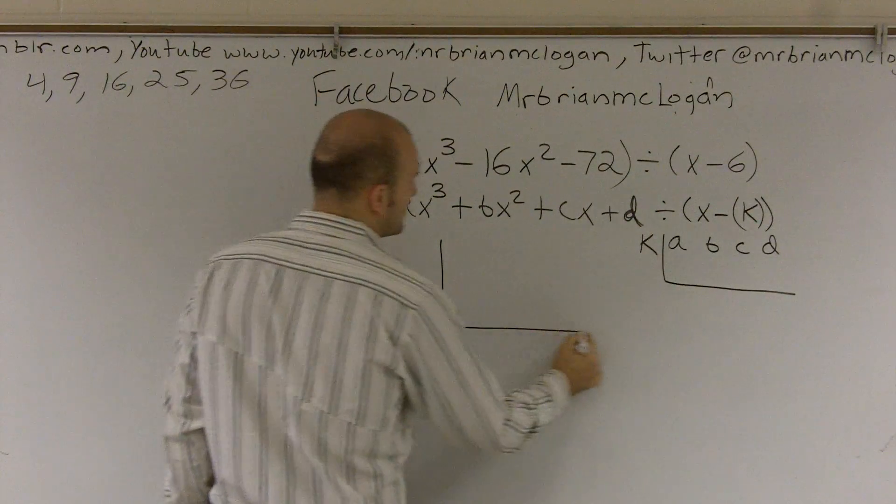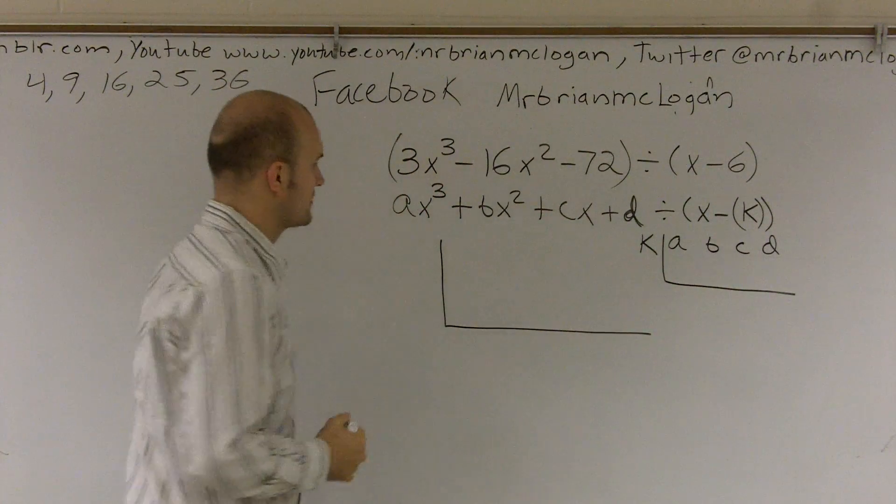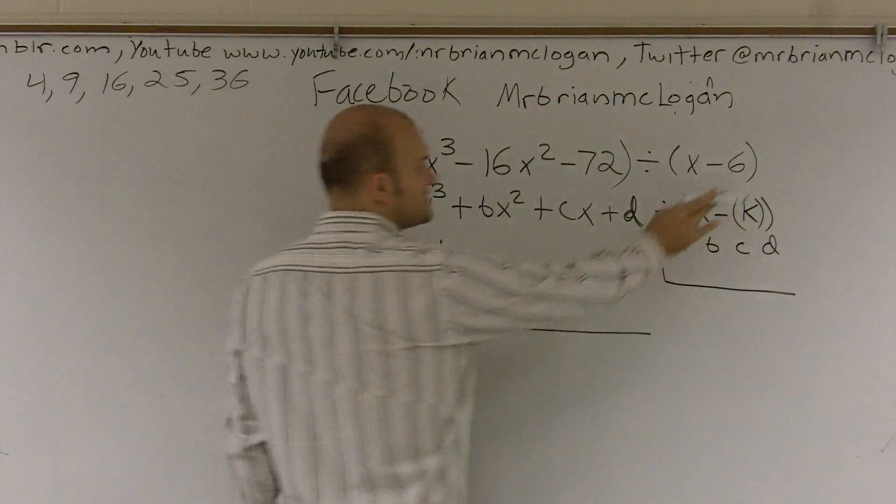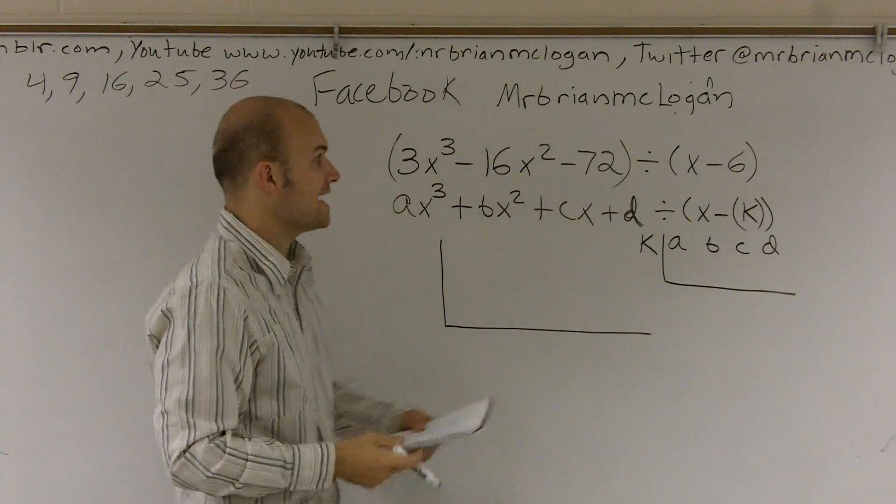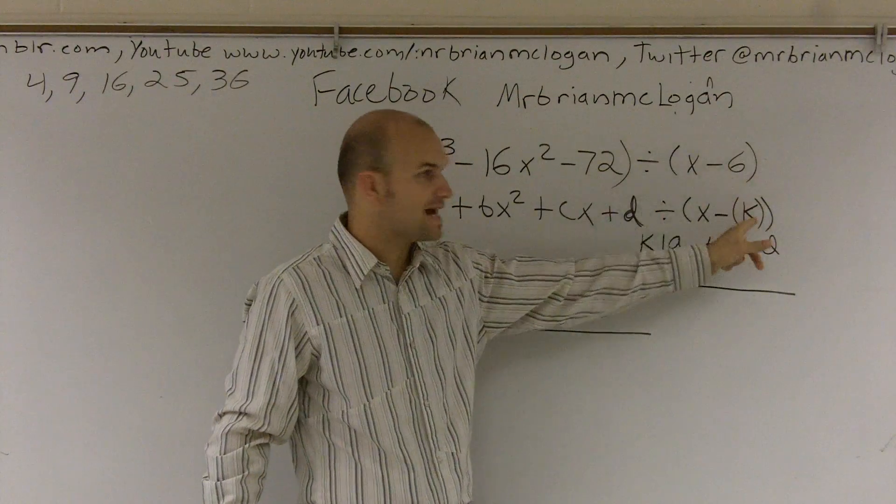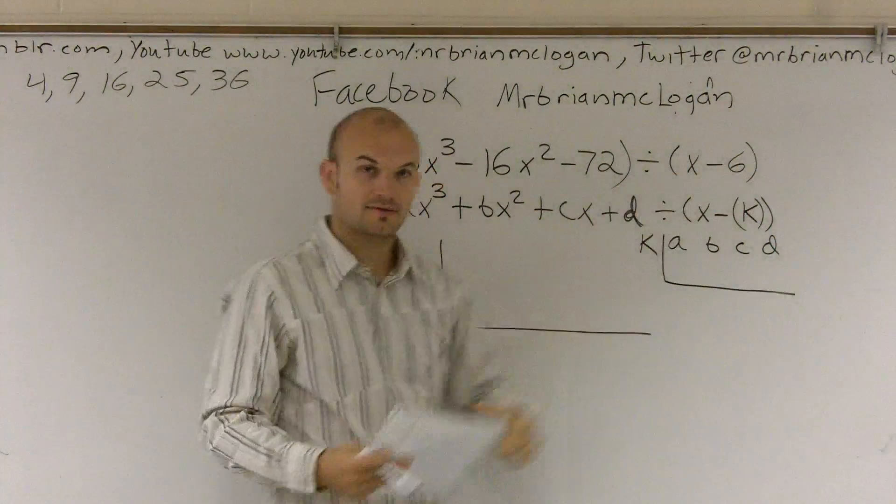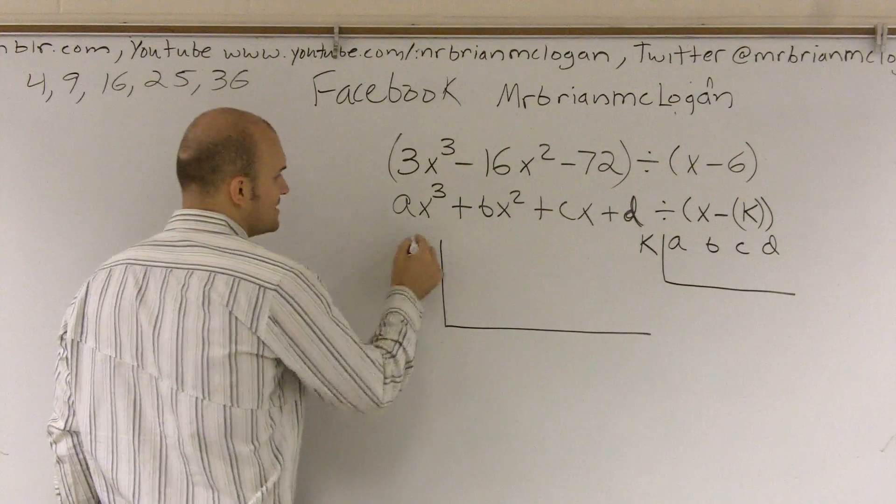So what we're going to do is we're going to draw a box like this. And let's see, our k for this value is 6. It's not a negative 6. Our value of k is actually 6. See how it's x minus k? Does everybody see that? So our k is going to be 6.